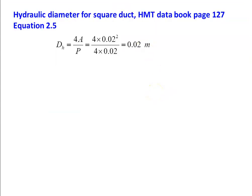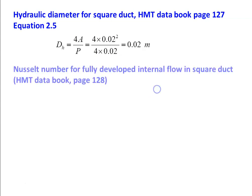The hydraulic diameter for this square duct — from the heat and mass transfer data book page 127, equation 2.5: Dh = 4A/Perimeter, where A is the cross-sectional area and P is the perimeter. For a square duct, A = a² and perimeter = 4a, so Dh = 4 × (0.02)² / (4 × 0.02) = 0.02 m.